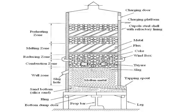A probe bar supports the door. After completion of the cycle, the probe bar is removed, the two doors are opened, and any material remaining inside the furnace can be removed for maintenance. Damaged refractory bricks can be replaced this way. The top is covered with a chimney. The empty portion above is called the stack, through which combustion gases pass to the atmosphere.